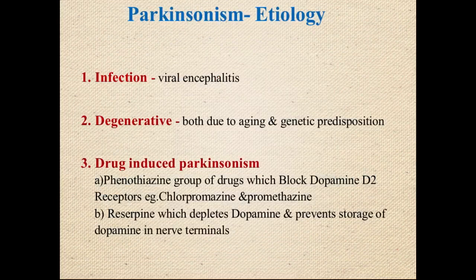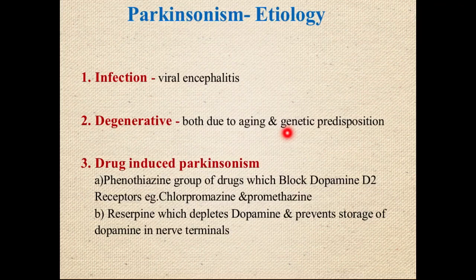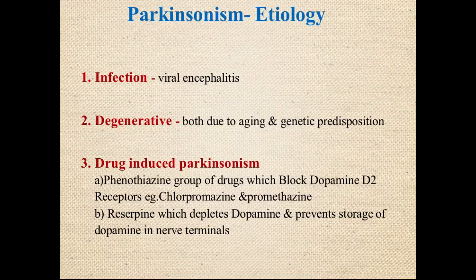The etiology of parkinsonism includes: age-related neurodegeneration (most common), viral encephalitis, genetic predisposition (causing earlier onset), and drug-induced parkinsonism. Drug-induced parkinsonism is caused by antipsychotic drugs, which inhibit dopamine receptors. When dopamine receptors are inhibited, acetylcholine becomes hyperexcited, ultimately causing the movement disorder.